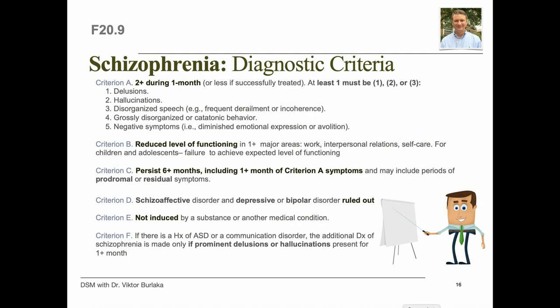For the diagnostic criteria for schizophrenia, Criterion A requires two or more of the five symptoms — delusions, hallucinations, disorganized speech, grossly disorganized or catatonic behavior, and negative symptoms — to be present for a significant portion of a one-month period. The length of symptoms can be shorter if a person receives successful treatment. At least one of these symptoms must be delusions, hallucinations, or disorganized speech.